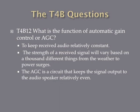What is the function of automatic gain control, or AGC? The answer is to keep received audio relatively constant. When your receiver receives a signal, the strength of that signal can vary from a thousand different things — if you're moving in a vehicle and a truck gets out of your way, the weather, power surges, the atmosphere. The AGC is a circuit that keeps the signal output of your receiver to your audio relatively even, so it has a nice, constant signal going to the speakers. This also protects the circuitry in your speakers and your radio.